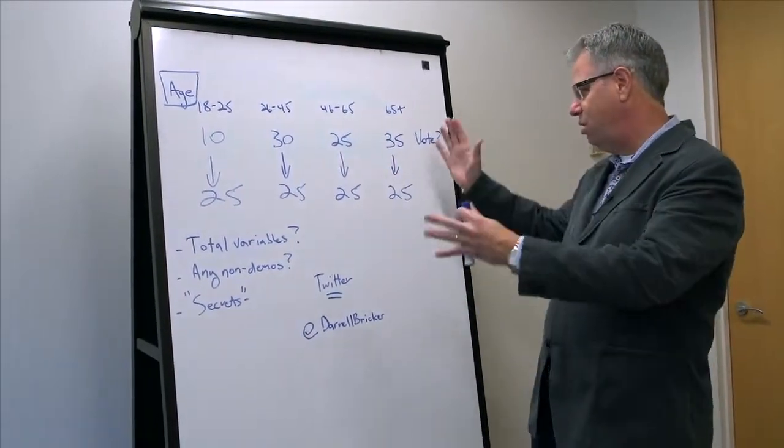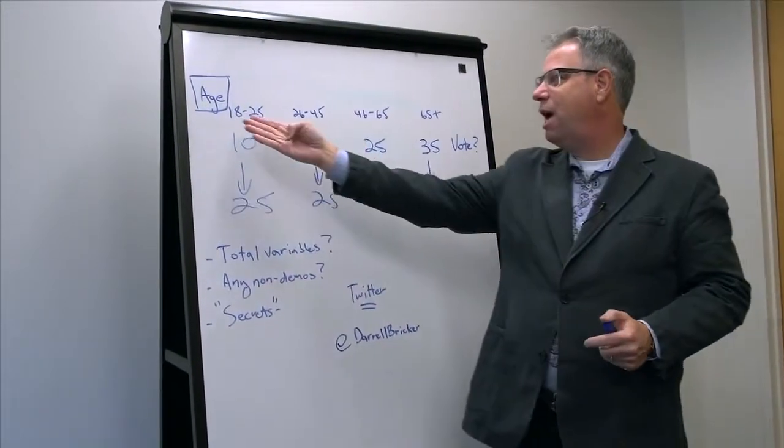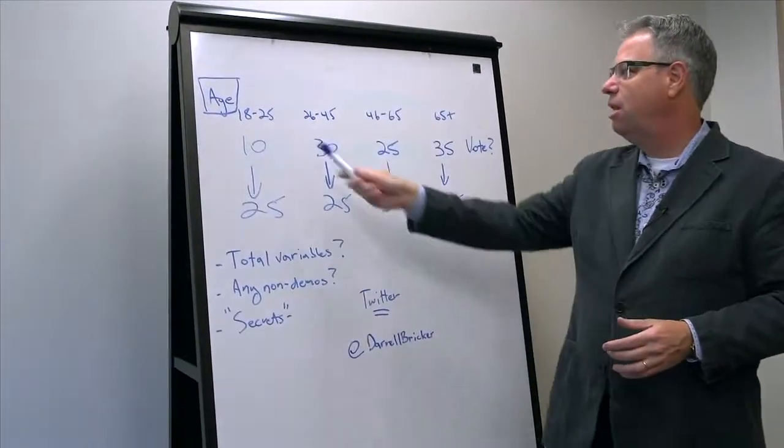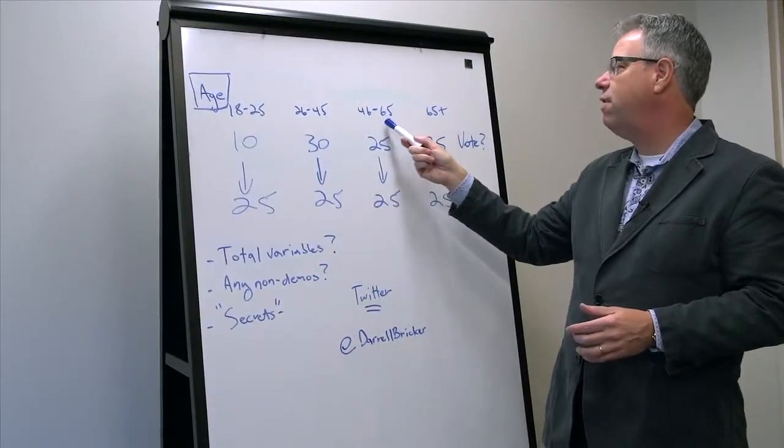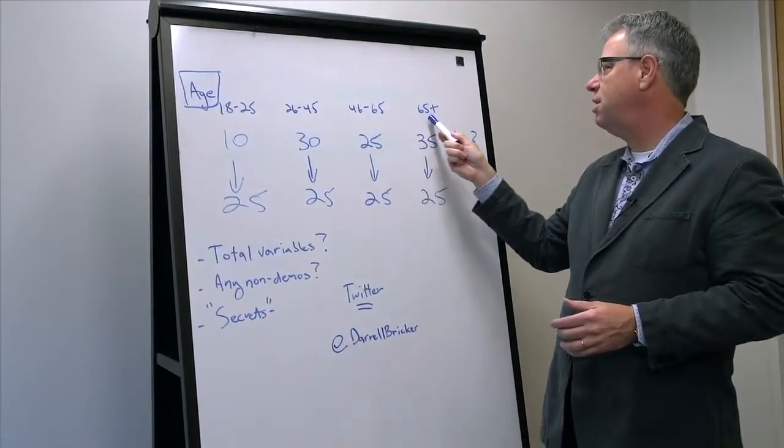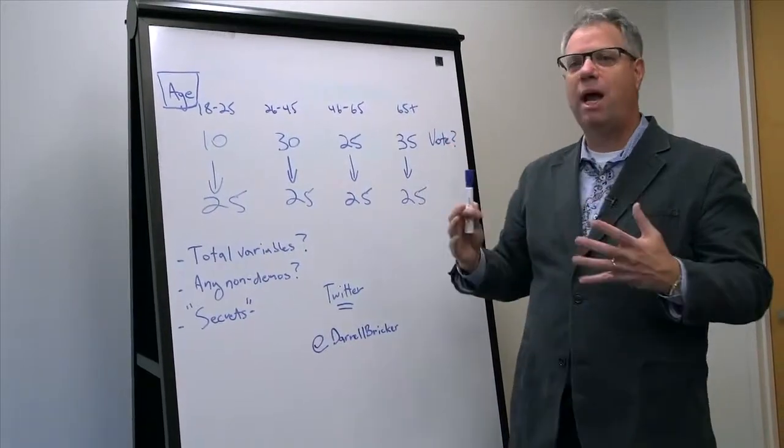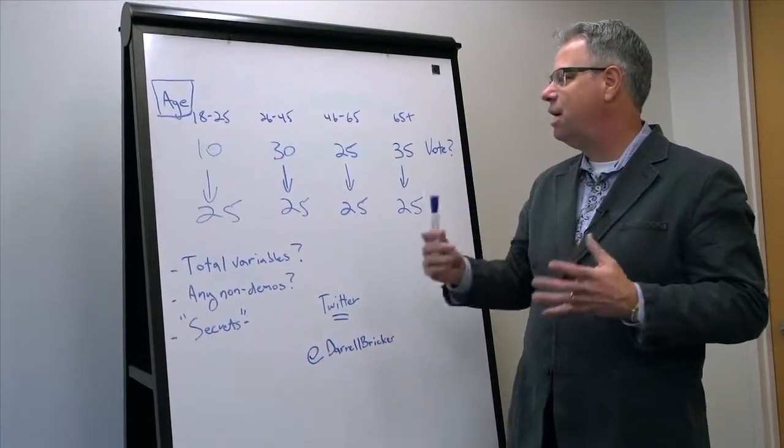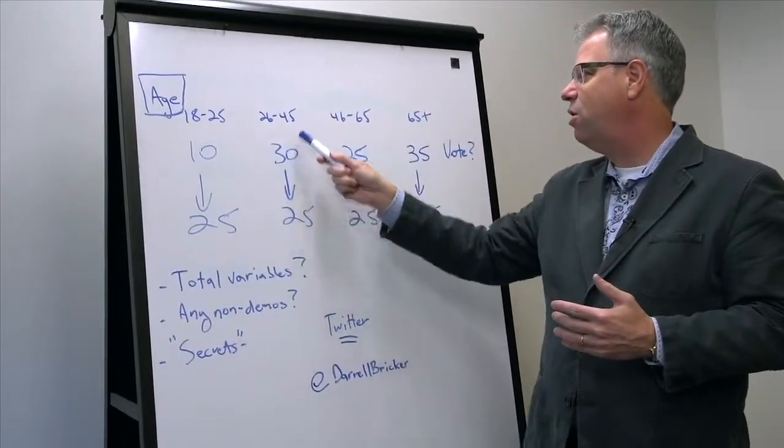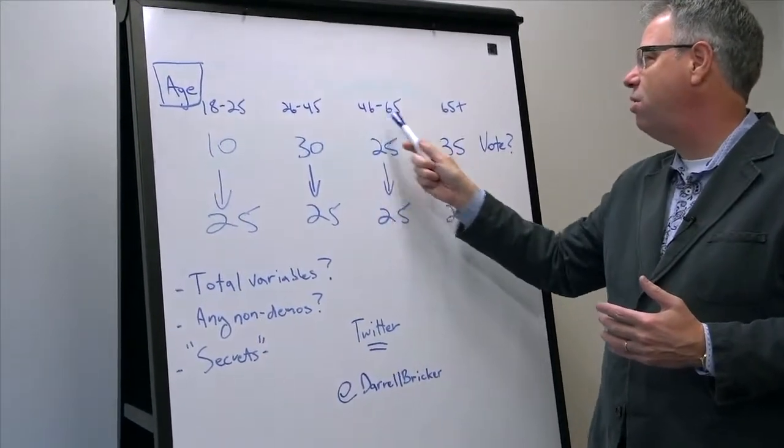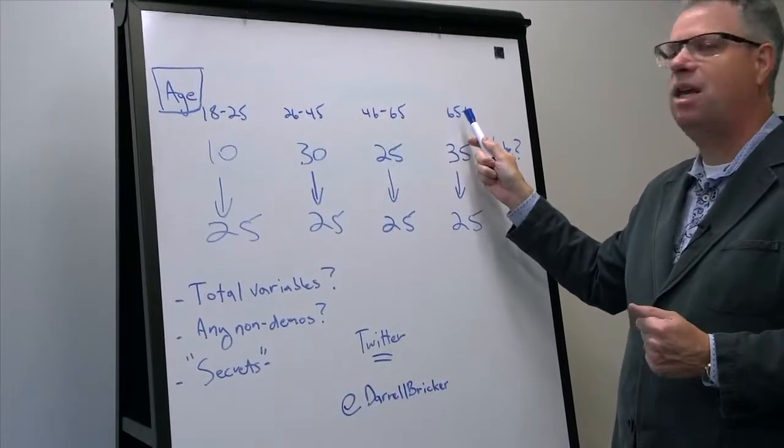So imagine we did a survey. Here's one that looks like a survey, in which one of the categories that we looked at was age. And these are the age categories across the top, 18 to 25, 26 to 45, 46 to 65, 65 plus. And what happened when they were in field is they actually ended up with a sample that looked like this. 10 in the first category, 30 in the second category, 25 in the third category, 35 in the next category.